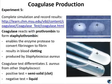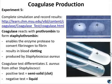Coagulase works in conjunction with normal plasma components to form protective fibrin barriers around individual bacterial cells, shielding them from phagocytosis and other types of host attack. The coagulase test is used routinely to differentiate Staphylococcus aureus from other species of Staphylococcus. S. aureus can be highly resistant to both normal immune response and antimicrobial agents due, in part, to its production of coagulase.